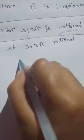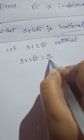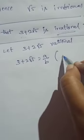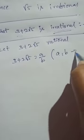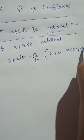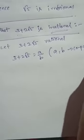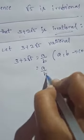Irrational means we can't write in the form of p by q. So 3 + 2√5 equals a/b, where a and b are co-primes.